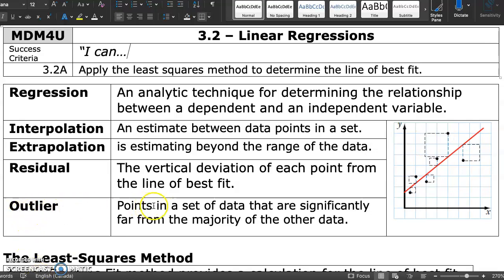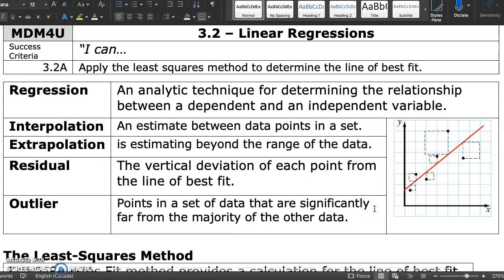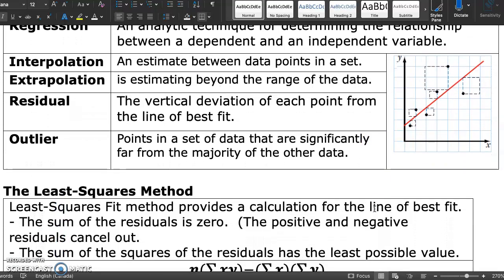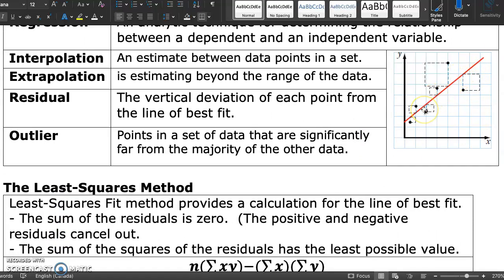Outlier: points in a set of data that are significantly far from the majority of other data. We don't quite have an outlier in this data set. This one is the furthest, but we're talking about significantly far from the majority of the data. They can often skew the results or affect our model in a drastic way.